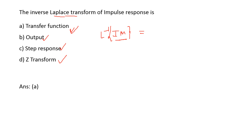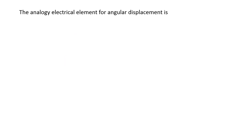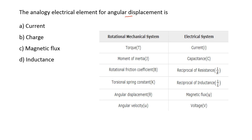Next: the analogous electrical element for angular displacement is — options are: current, charge, magnetic flux, inductance. This tabular column gives the analogy between the rotational mechanical system and the electrical system. Angular displacement in the rotational mechanical system is analogous to magnetic flux. So option C is the right answer.